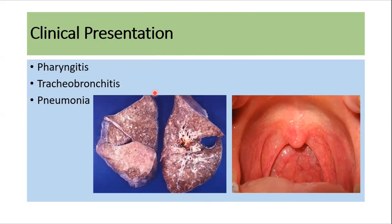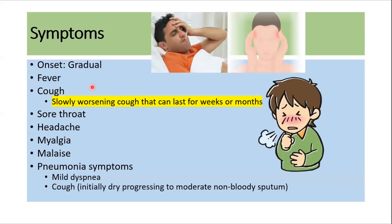Patients usually present with pharyngitis, tracheobronchitis, or pneumonia, with tracheobronchitis being the most common presentation. Symptoms include fever and a gradual-onset cough that is slowly worsening and can last for weeks to months. This prolonged cough is a typical feature of Mycoplasma pneumoniae infection that helps differentiate it from other viral infections.